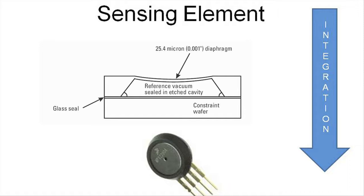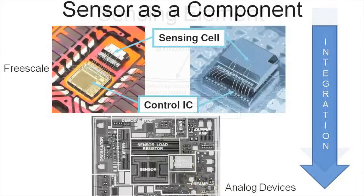However, in some instances the signal conditioning must be integrated with the sensor, since the sensor's output is so small and sensitive to interference. A good example is MEMS accelerometers that have a femtofarad-level output. In the top diagram, we have a sensing cell that is separated from the control circuitry.